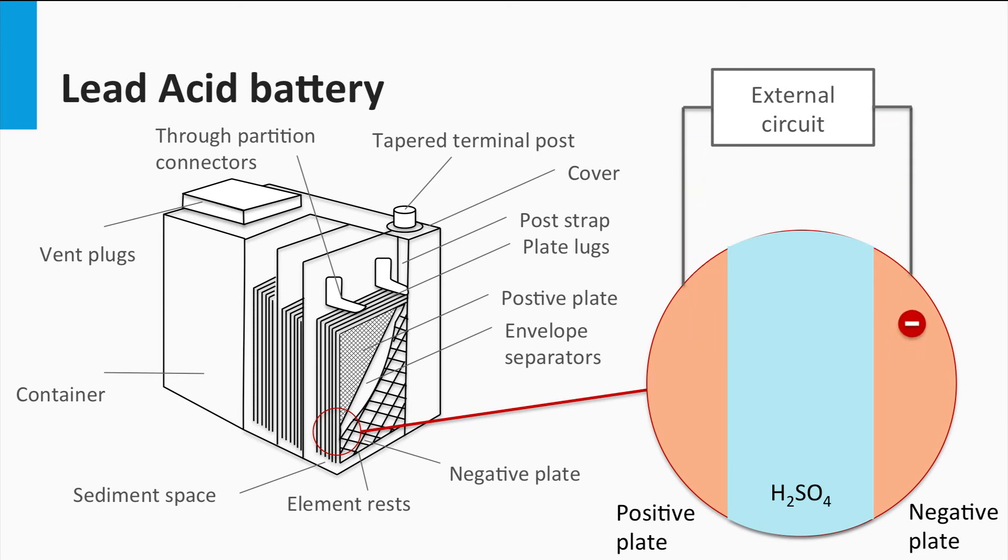When electricity is drawn, electrons flow from the negative to the positive electrode through the external circuit, causing a chemical reaction between the plates and the electrolyte. This forward reaction also depletes the electrolyte, affecting its state of charge, or SOC. When the battery is recharged, the flow of electrons is reversed, as the external circuit doesn't have a load, but a source that has a higher voltage than the battery to enable the reverse reactions.